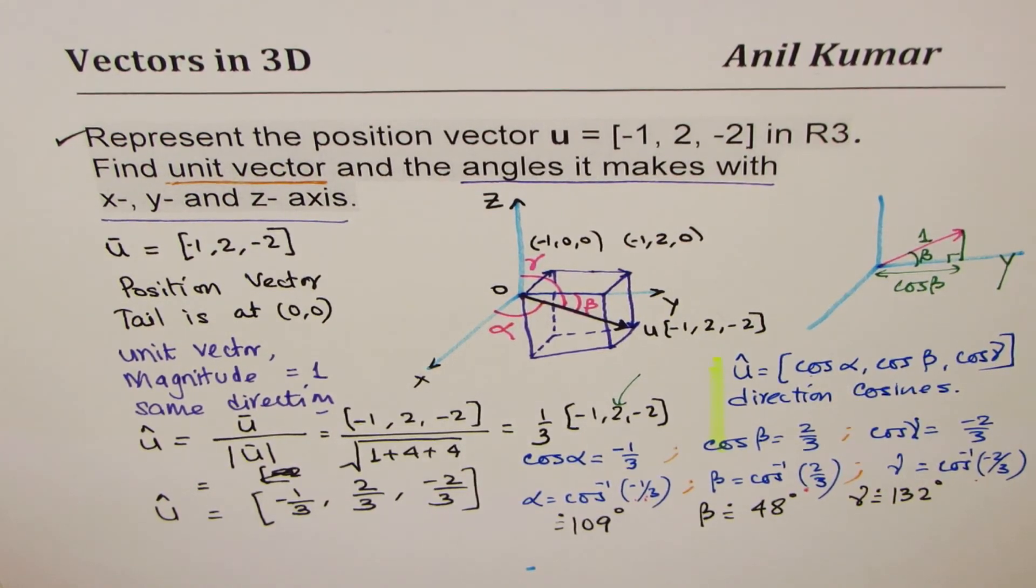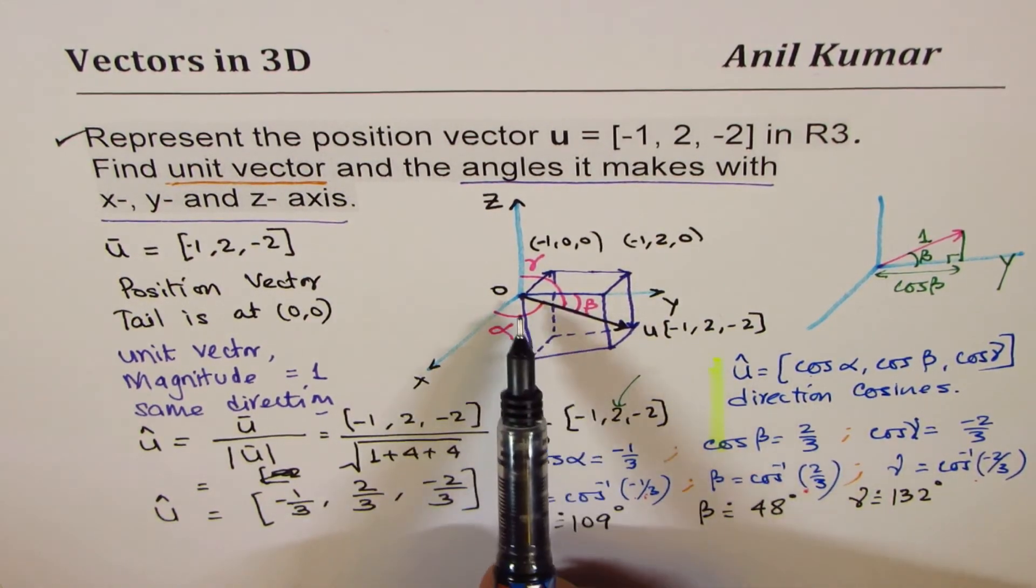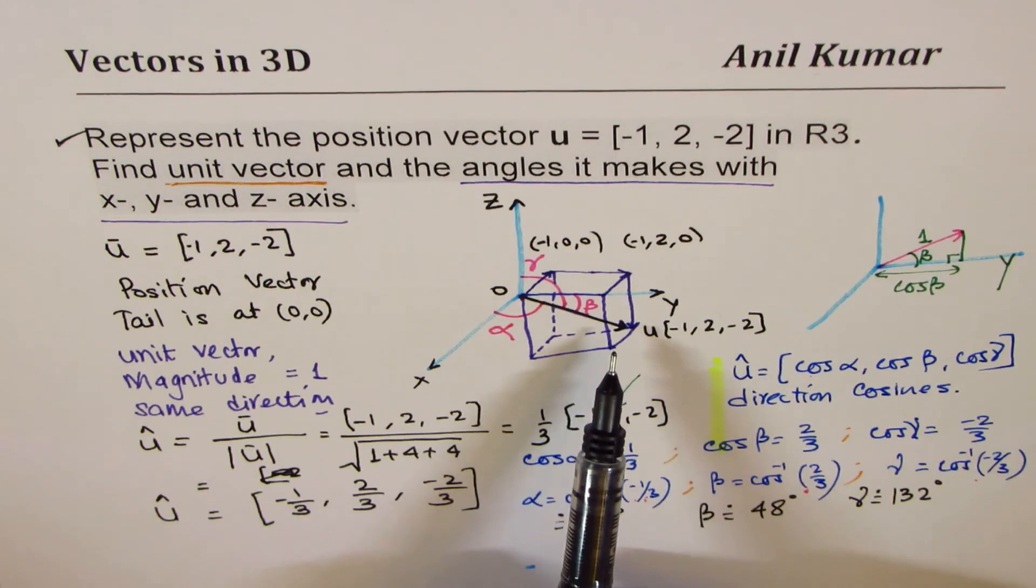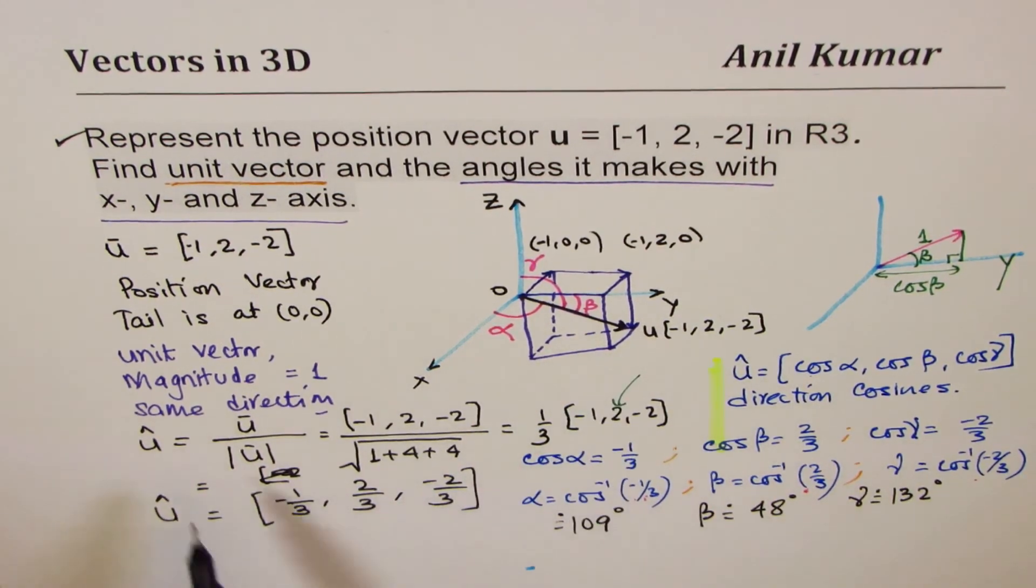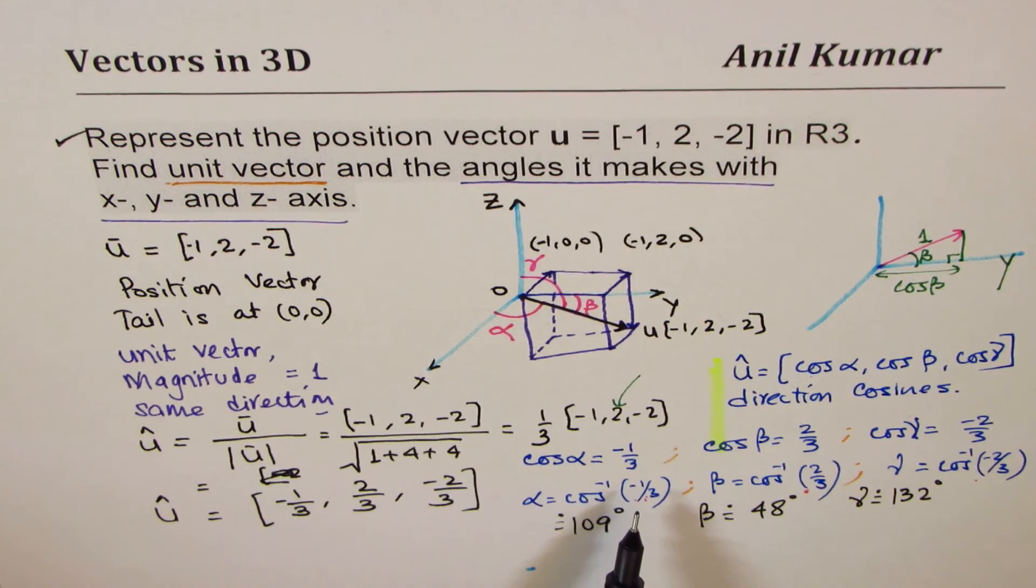So, I hope the steps are very clear so we have understood how to represent a vector, rather a position vector, in R3. How to find its unit vector and directions. Perfect. Feel free to share your comments and views. If you like and subscribe, that'll be great. Thanks for watching.